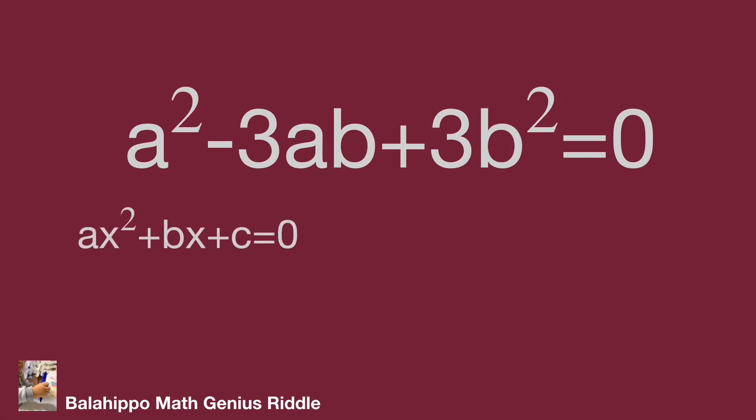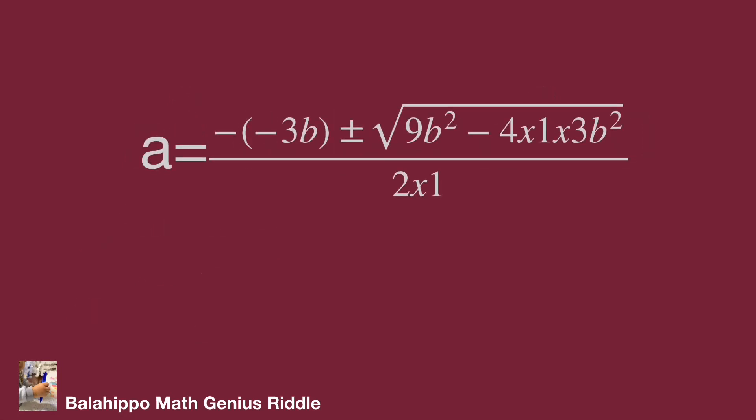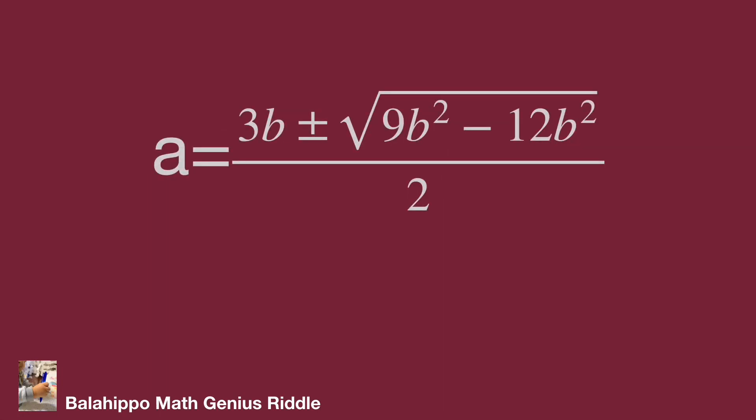The formula to find x from ax² + bx + c = 0 is x = (-b ± √(b² - 4ac))/(2a). Apply this rule to the equation: a = (3b ± √(9b² - 12b²))/(2), which equals (3b ± √(9b² - 12b²))/2.